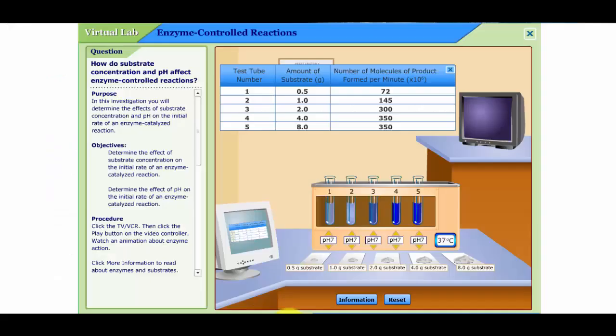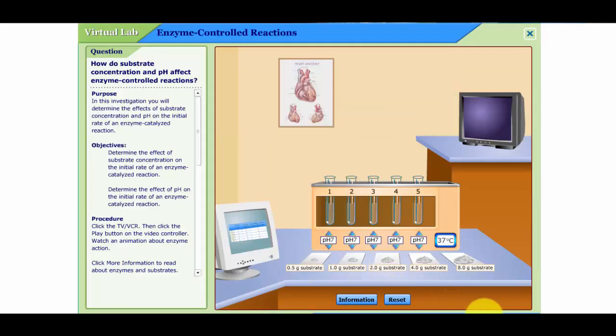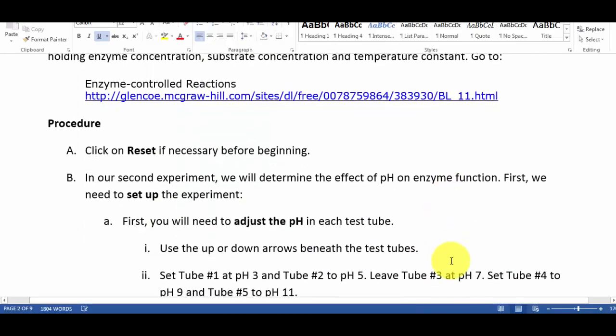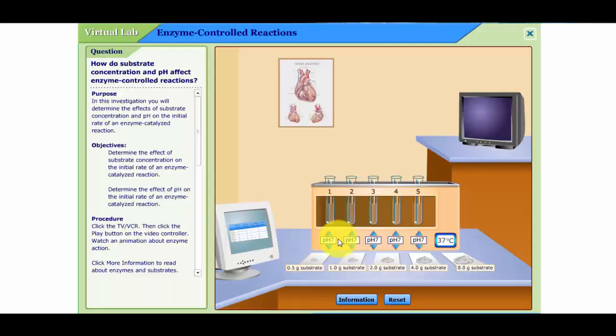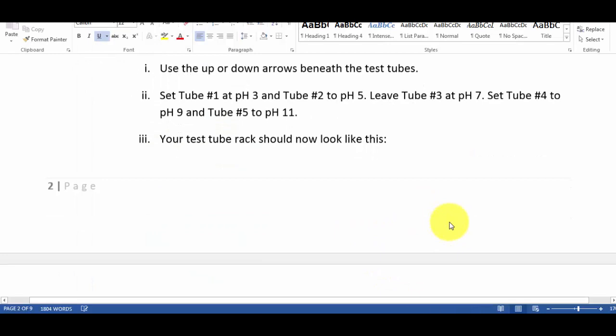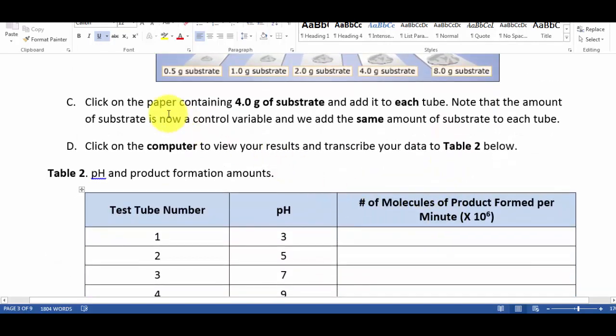To do the pH one, you're going to go back, you're going to reset it, and then you have to adjust the pH. So tube one is at 3, 5, 7, 9, and 11. So you can click it down: there's 3, 5, 7, 9... oh yes, it can go to 11.